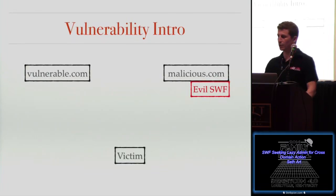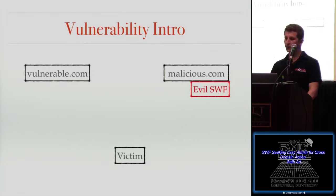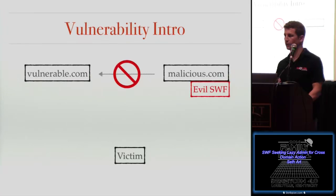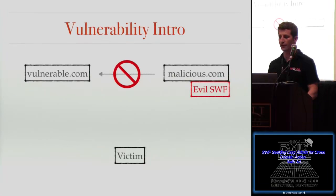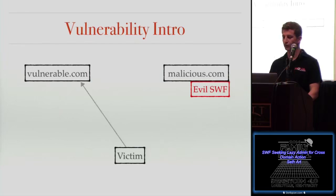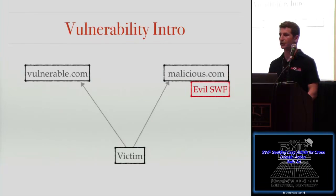To illustrate that, there are three parties involved in this exploitation: the vulnerable server, the malicious server hosting the evil SWF file, and the victim. At no point in this attack does the malicious server communicate directly with the vulnerable server. What is required is that the victim needs to be authenticated with the vulnerable server, or have privileged access to it. The second requirement is that the victim has to somehow arrive at the malicious server — through phishing, watering hole attacks, something like that.